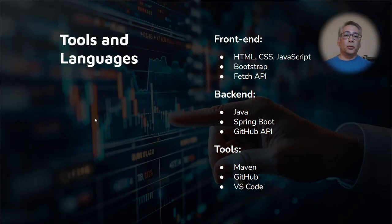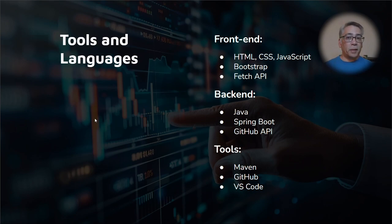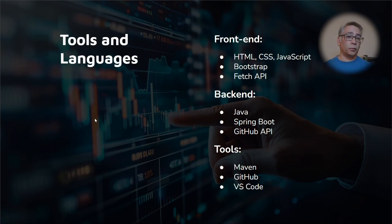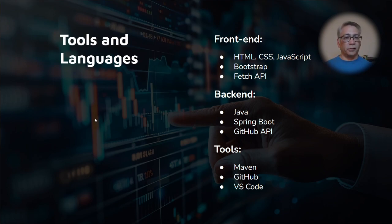The tools and languages we're going to use: HTML, CSS, and JavaScript on the front end; Bootstrap for themes; and the Fetch API to communicate with our back-end Java server. All of this runs locally for the editor part of the blog. The server will be Spring Boot, the back end written in Java, talking to the GitHub API to save posts as drafts or publish them to the hosted folder. It's a three-tiered architecture — front end, back end, and a database — where the GitHub API substitutes as our database.